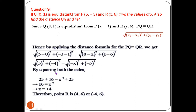Squaring both sides: 25 + 16 = x² + 25. The 25 appears on both sides and cancels. So x² = 16, meaning x = ±4. Therefore R can be (4, 6) or (-4, 6).